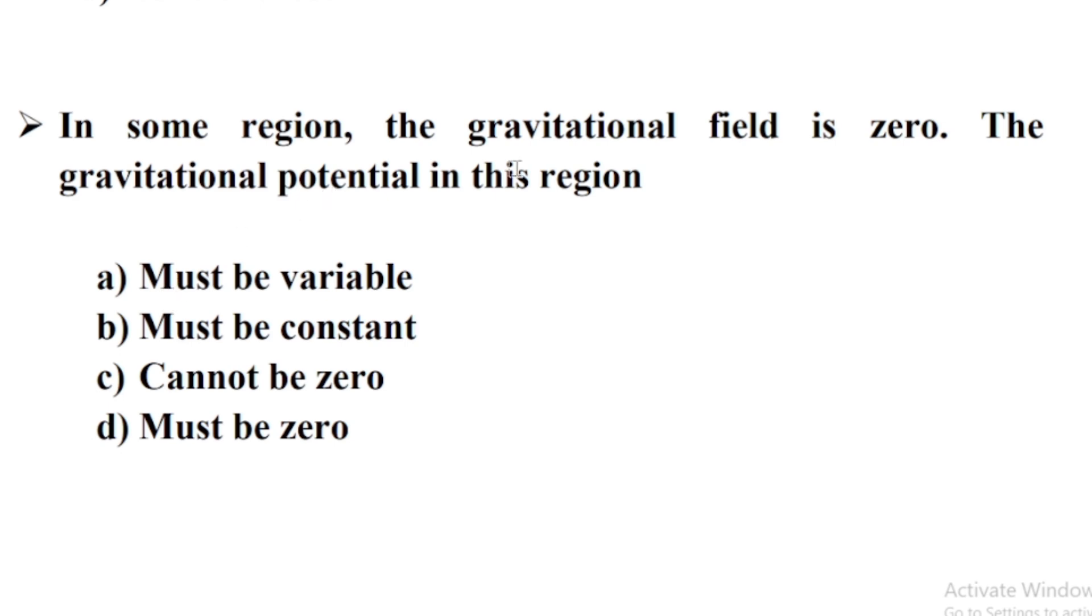In some region, the gravitational field is zero. The gravitational potential in this region Option B must be constant.